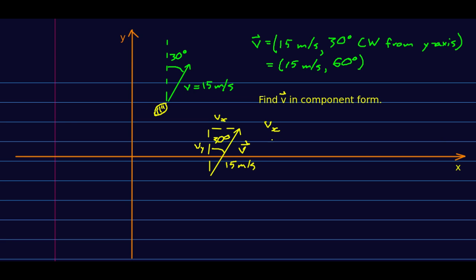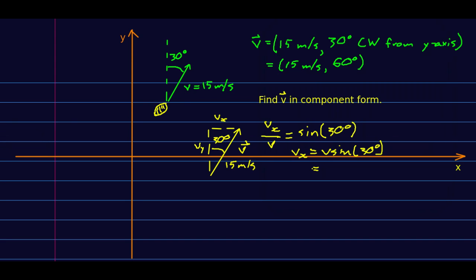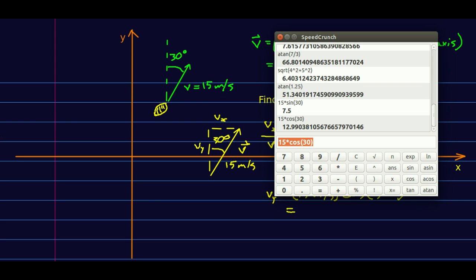Vx over v. That is the opposite over the hypotenuse and so that's sine of the angle we're talking about. So 30 degrees, right? And so vx is v sine 30 degrees. So that is 7.5. Similarly, you can see that vy must be v times cosine of 30 degrees, more or less 13.